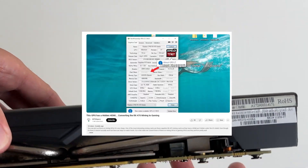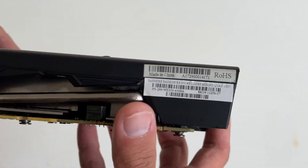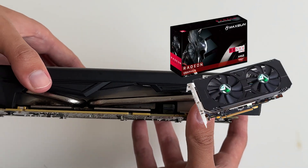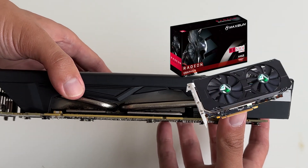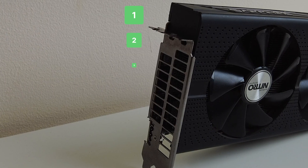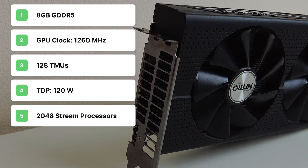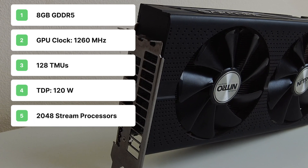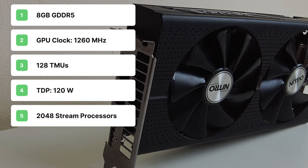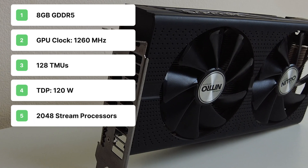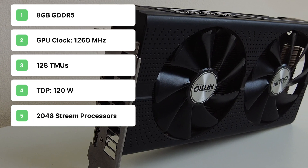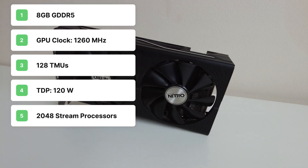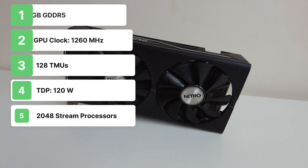And now we're going to convert it into an RX 580 2048 SP gaming GPU. It has 8GB of GDDR5 memory, a GPU clock of 1260MHz, 128 texture units, a TDP of 120W, and most importantly, 2048 stream processors.